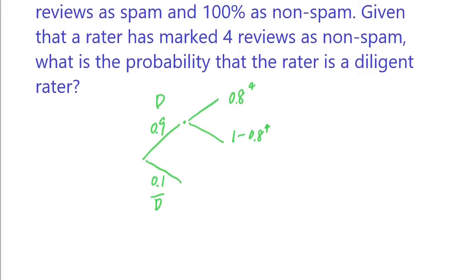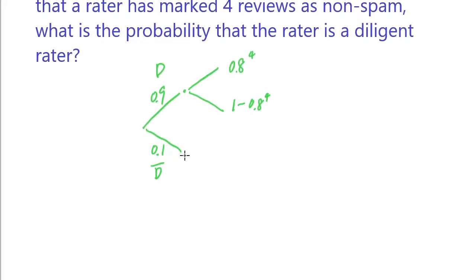On the bottom path for a non-diligent rater, this person is always marking it as non-spam. And there's a zero chance of not doing it because a non-diligent rater can only mark non-spam. What we observe is this case and this case.